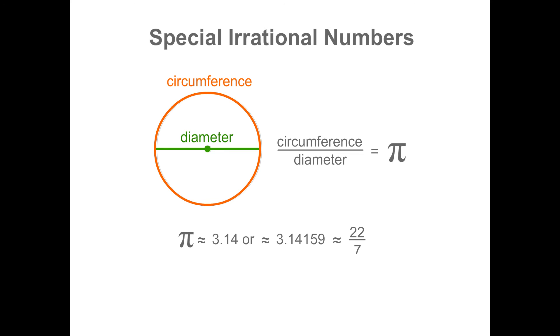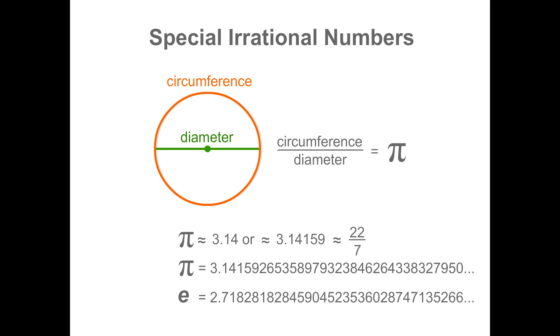Its numerical representation is actually a decimal that never repeats and never terminates. Thus, it is an irrational number. Another example is e. Its numerical decimal value never repeats or terminates.